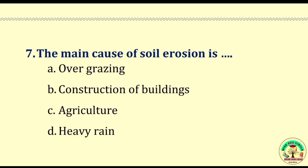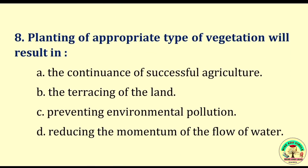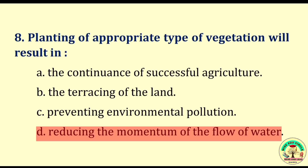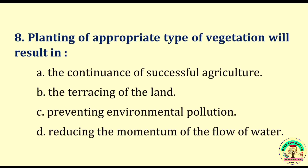Question number seven: The main cause of soil erosion is — overgrazing, construction of buildings, agriculture, or heavy rain. The right answer is heavy rain. Question number eight: Planting of appropriate type of vegetation will result in — the continuance of successful agriculture, the thriving of the land, preventing environmental pollution, or reducing the momentum of the flow of water. The right answer is reducing the momentum of the flow of water.